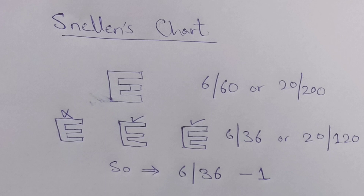When a patient can read most of a line but misses a few letters, we use a minus notation. For example, if they can read the 6/24 line but miss two letters, we record it as 6/24 minus 2. If they read the 6/36 line but miss one letter, it's 6/36 minus 1. However, if a patient cannot read more than two letters on a line, we do not assign that line — instead we record the line above it. A patient is allowed a maximum of two errors on any given line.